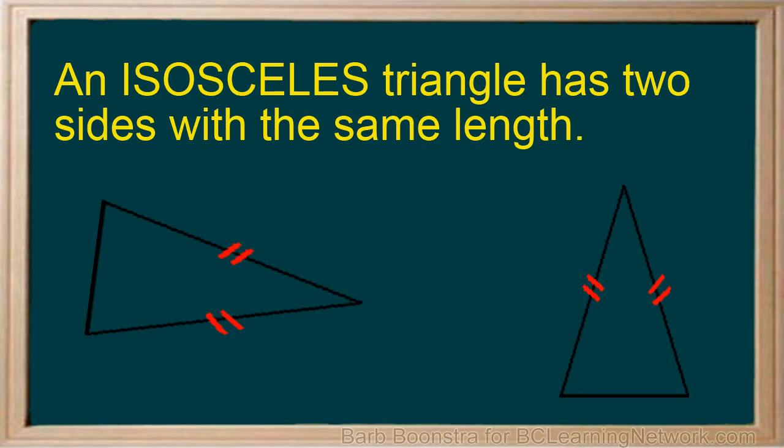An isosceles triangle has two sides the same length. Isosceles triangles, just like all other triangles, can be drawn in various orientations.